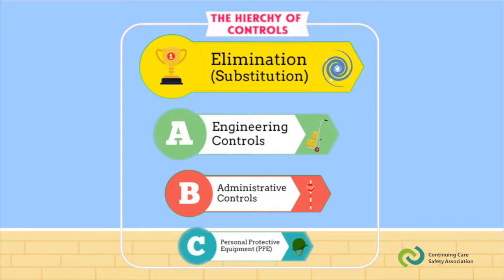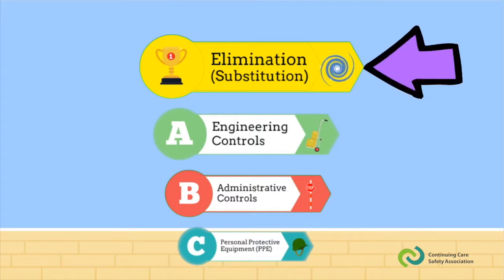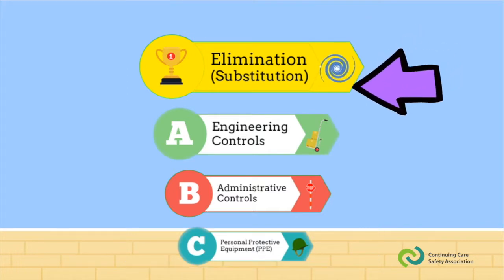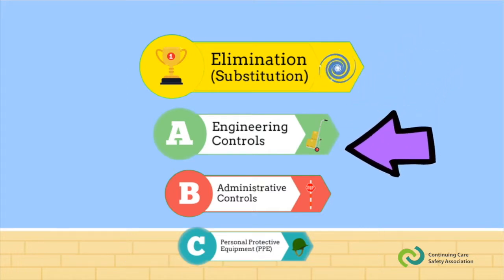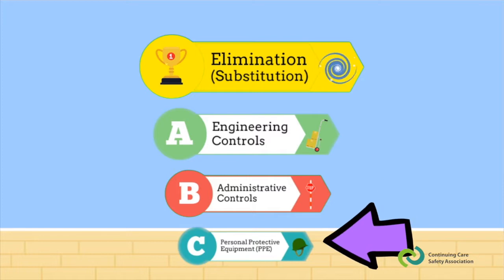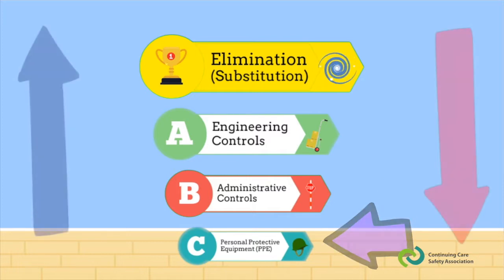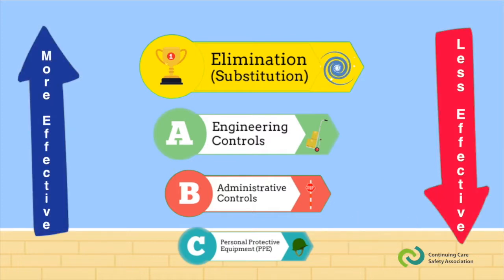It shows the best ways to control the danger posed by hazards. You will notice that the top category is largest, and as we go down, each category gets smaller. We made it this way to show that as we go down, the controls get less effective. The higher up a control is, the better job it generally does of keeping people safe.